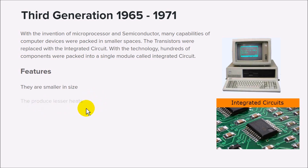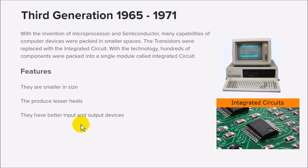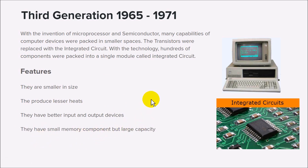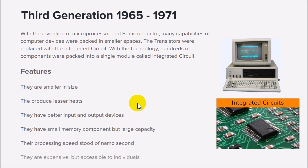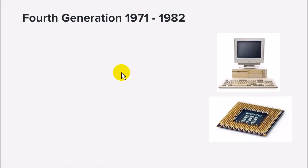Features of the third generation include: they are smaller in size with the help of integrated circuits where instructions are coded. They produce lesser heat, with fewer terminals. Inputs and outputs improved — this is where keyboards and the mouse were introduced. Memory devices became smaller but storage capacity became larger, allowing computers to store more data. Their speed increased to nanoseconds, and they became accessible and affordable to individuals.